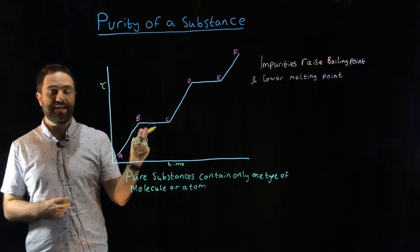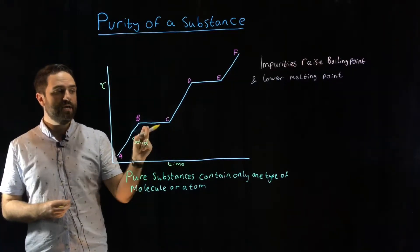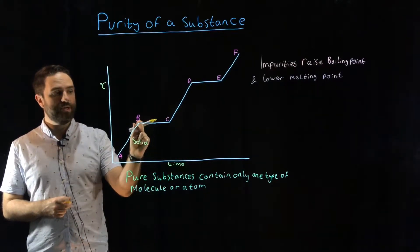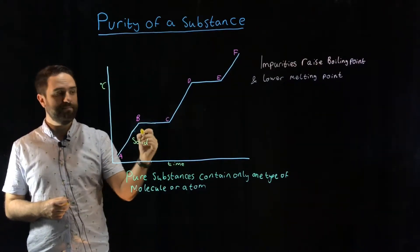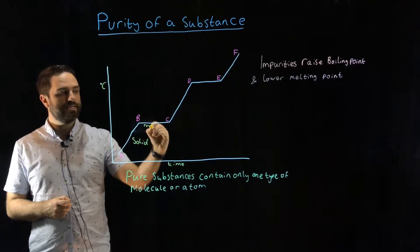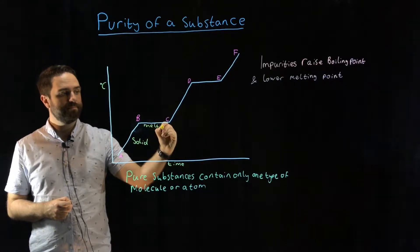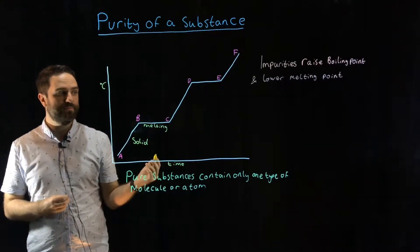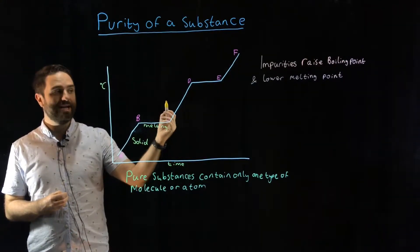That's because the energy from the heat is now going to overcoming the intermolecular bonds. So between point B and point C, the substance is melting. Once it reaches point C, those intermolecular bonds have been broken, and it is now a liquid.